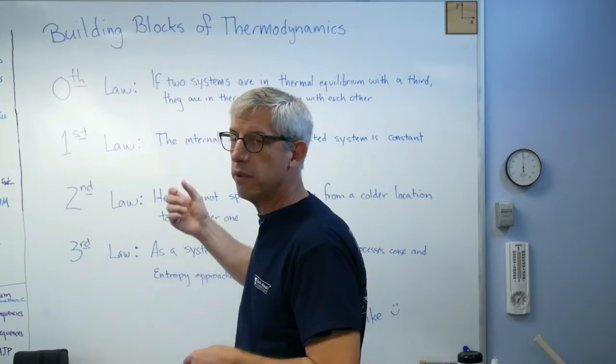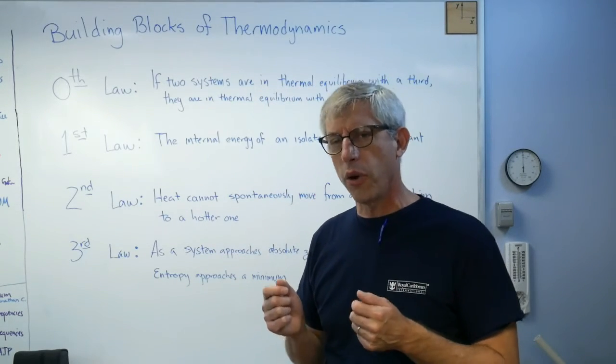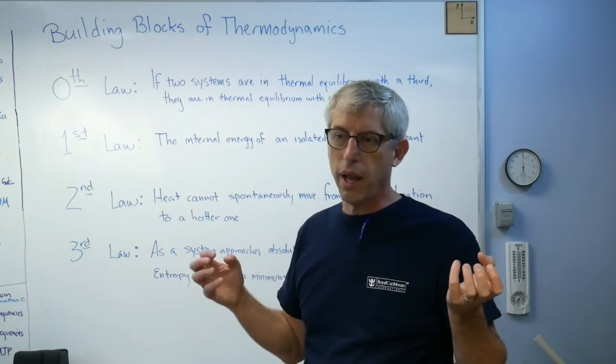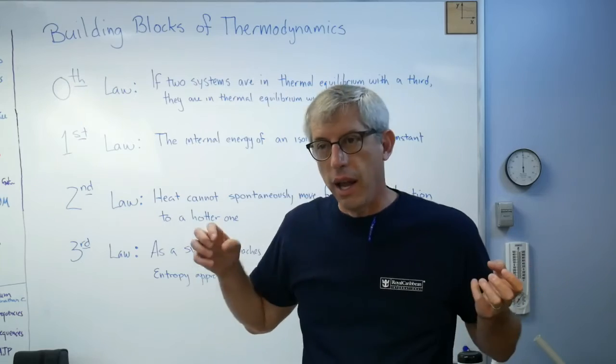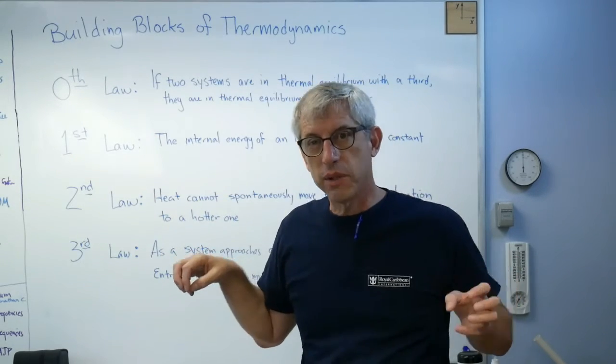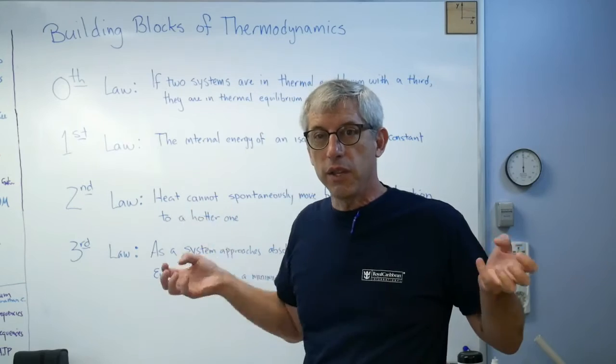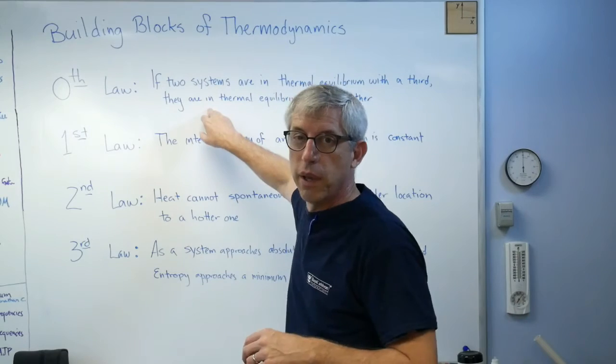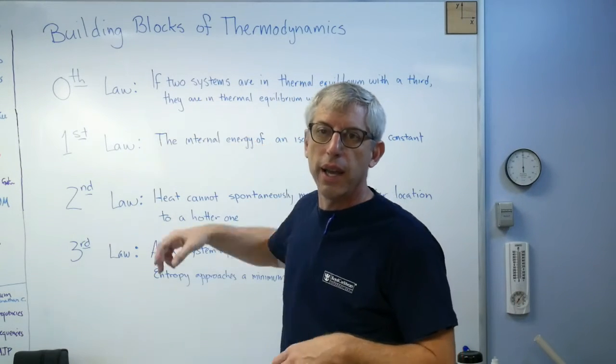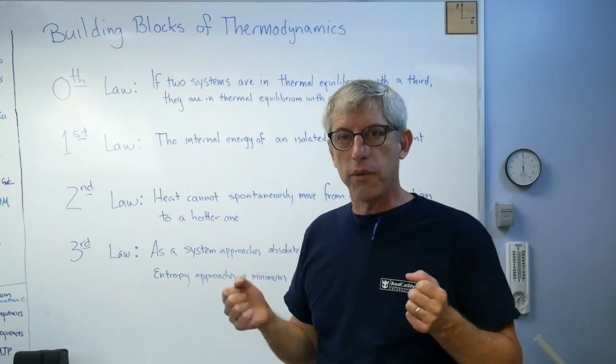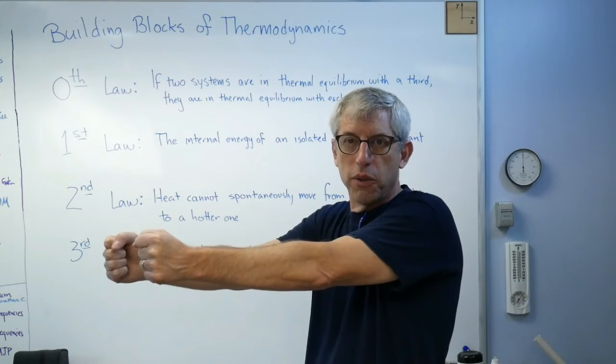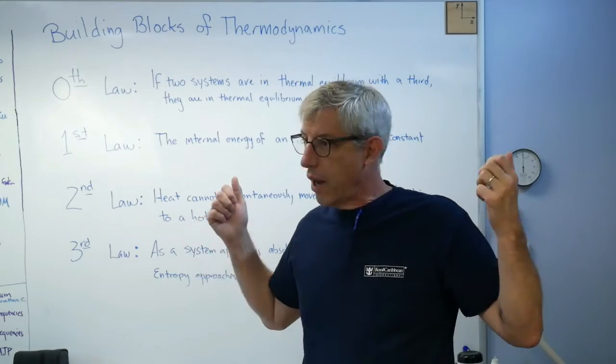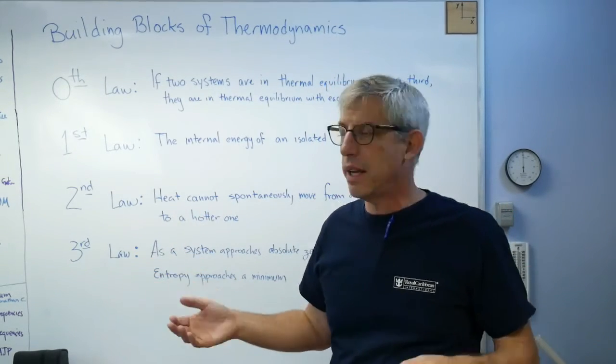The zeroth law says that if two systems are in thermal equilibrium with a third, then they are in thermal equilibrium with each other. That means if I have a block of metal here and a block of metal here and a block of metal there, if this one's the same temperature as that one and this one's the same temperature as that one, then these two are the same temperature as each other. It's there for bookkeeping reasons, but you're not going to use it very often. It's the reason thermometers work.